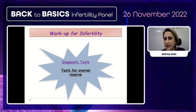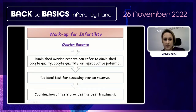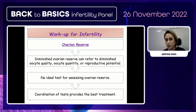The ovarian reserve test is very important in ART clinics. Diminished ovarian reserve can refer to diminished oocyte quality, oocyte quantity, and reproductive potential. There is no ideal single test, but a combination of tests provides the best assessment.